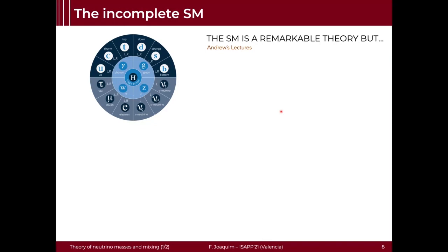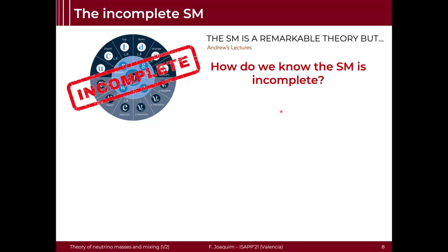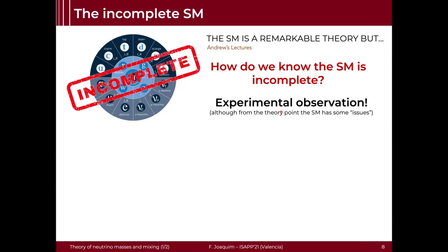Then in the 70s, Glashow, Weinberg and Salam came up with the standard model, which you have already seen in Andrew's lectures — it is a very remarkable theory based on very powerful mathematical principles of gauge symmetry. But we know today that the standard model is incomplete. There are some theoretical issues with the standard model that, for theorists, are actually not very elegant, like the hierarchy problem, the flavor problem, the Theta-QCD problem. But when I say that the standard model is incomplete, I mean incomplete because of experimental evidence.